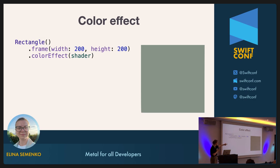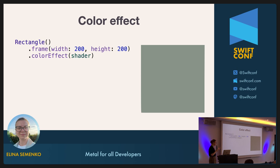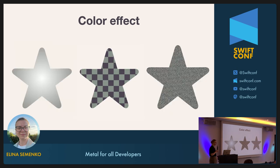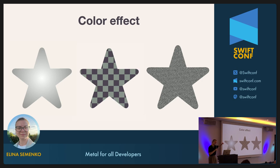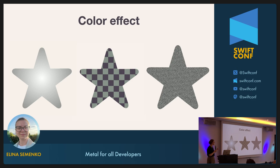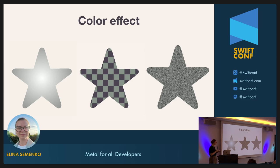Then we create a view and apply our color effect — it results in a nice green rectangle. But the color effect is much more than filling shapes with solid colors. You can apply effects to images, create patterns, create animations, create noise, de-noise images, and much more. Basically, with the color effect you can do everything that involves changing the colors of an image.